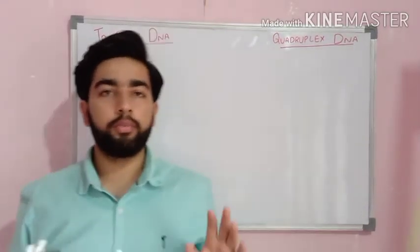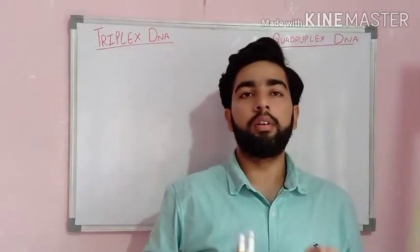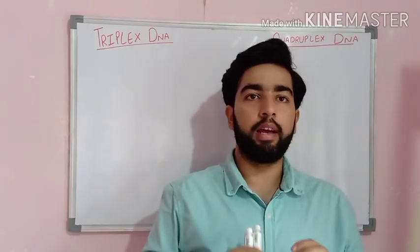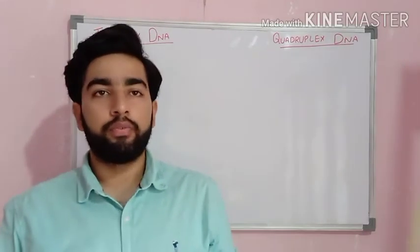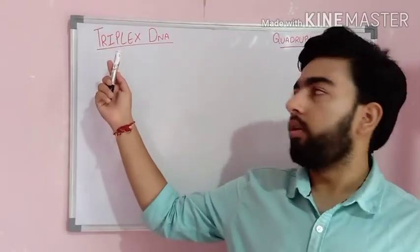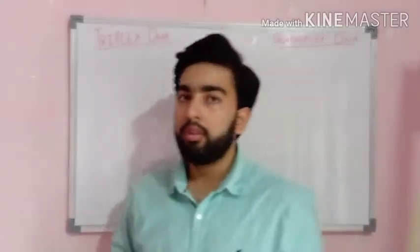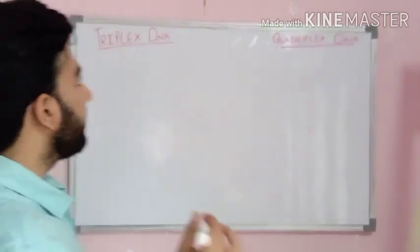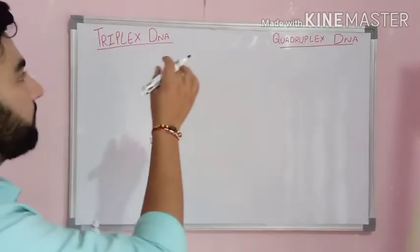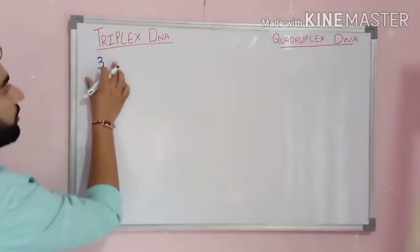Hello friends, welcome to the video class. In this class we're going to learn about the different types of DNA and its structure. First we'll discuss the triple helical DNA, also known as triple helical DNA. The word 'triple' itself means three — the composition of three strands.